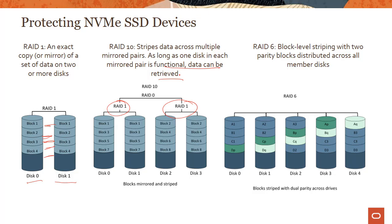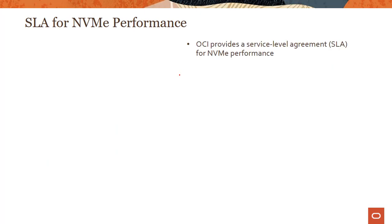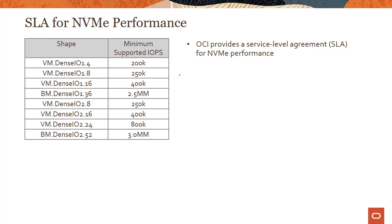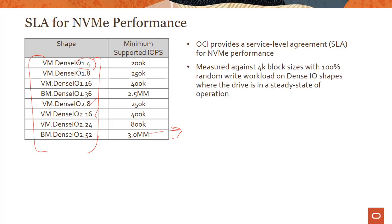Keep in mind that RAID configuration is entirely the customer's responsibility — OCI does not configure RAID out of the box. That said, OCI does provide SLAs for NVMe performance. For example, a bare metal Dense IO shape with 52 cores supports 3 million IOPS. These numbers are available in the documentation, and there is fine print around 4K block sizes and read/write mix ratios. With that, thanks for watching this module on local NVMe devices. In the next module we'll introduce the block volume service.